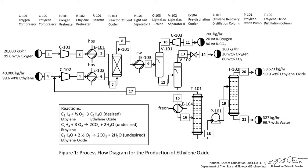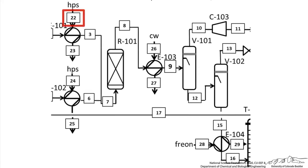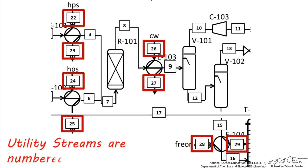A better, more detailed representation of the same process would be this process flow diagram. If we now look more closely at these heat exchangers, all streams including the ones used for utilities are numbered. The process streams are numbered 1 through 21, and the utility streams are numbered 22 through 29. Notice that the utility streams are the last ones numbered because the process streams take priority.